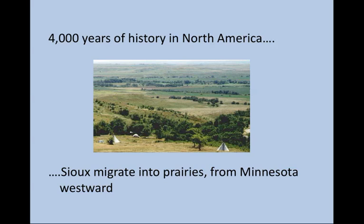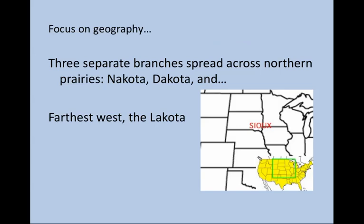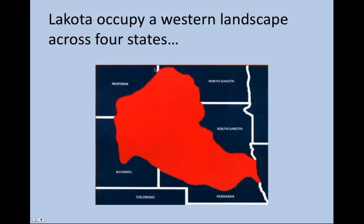The Sioux themselves had migrated into the region we call the Prairies, from Minnesota westward to the Dakotas and Montana. In talking about the Sioux, we are really talking about three separate but related branches of people who came to reside in what we call the northern territories — from roughly the Great Lakes region westward to the Dakotas, Montana, and Wyoming. The farthest west of the Sioux people, in the Montana, Wyoming, Nebraska, and Dakota region, are those we call the Lakota Sioux.